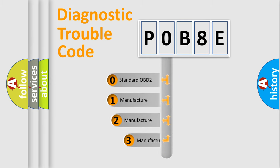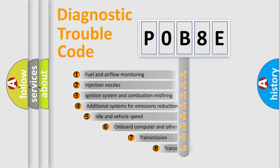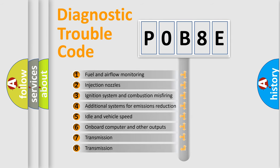If the second character is expressed as zero, it is a standardized error. In the case of numbers 1, 2, or 3, it is a more specific expression of the car-specific error. The third character specifies a subset of errors.